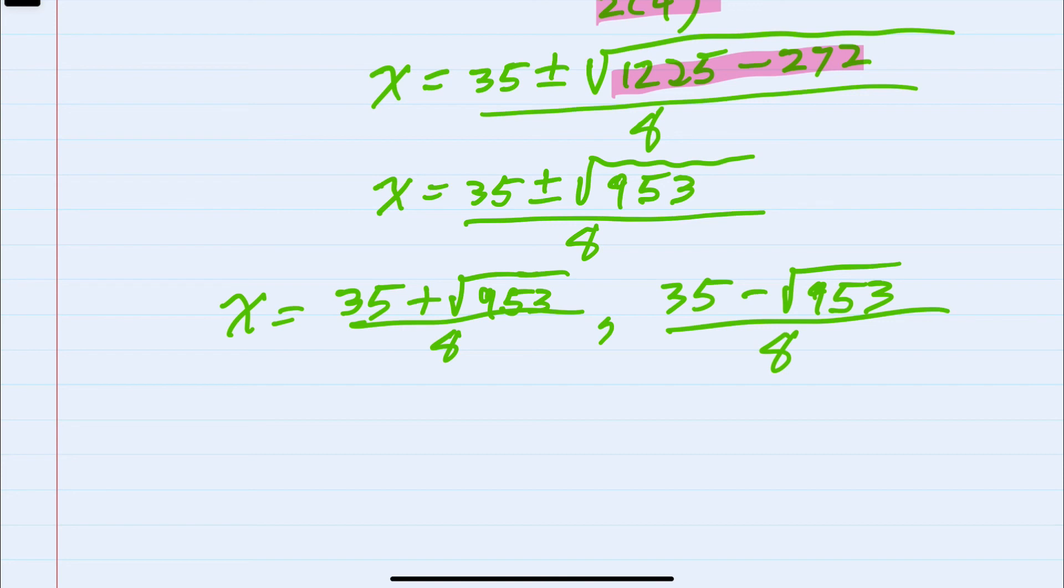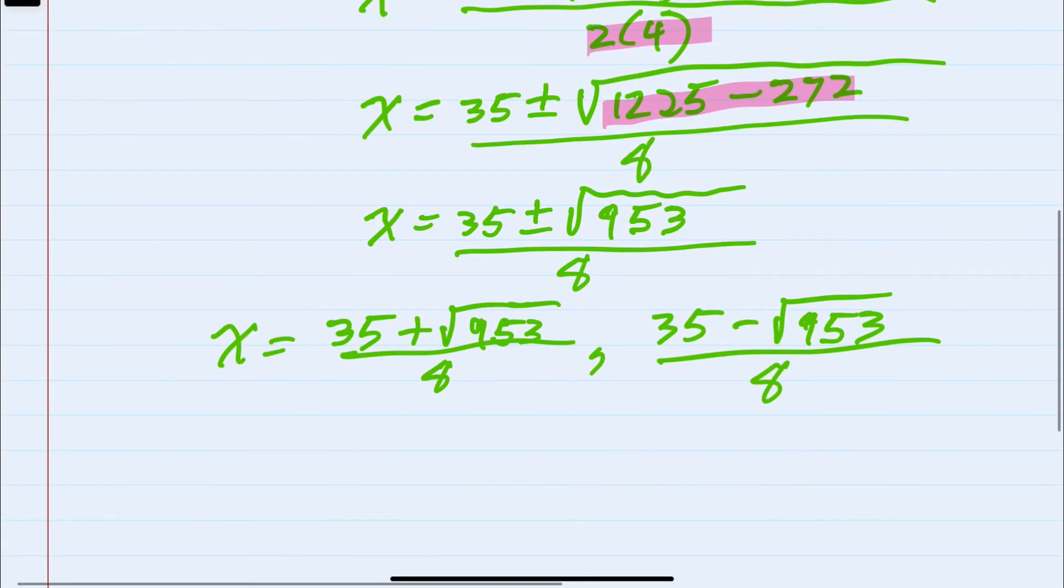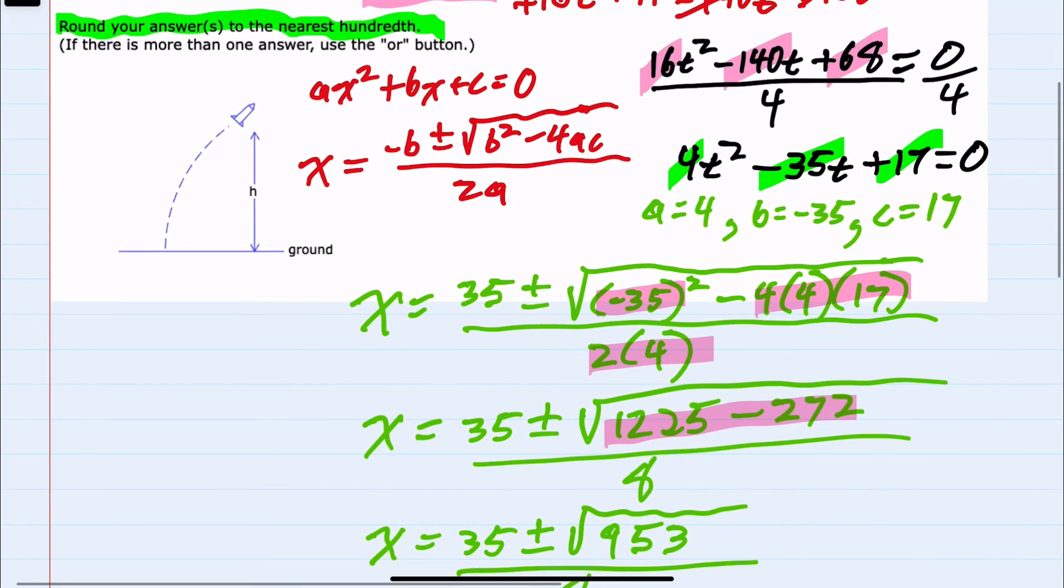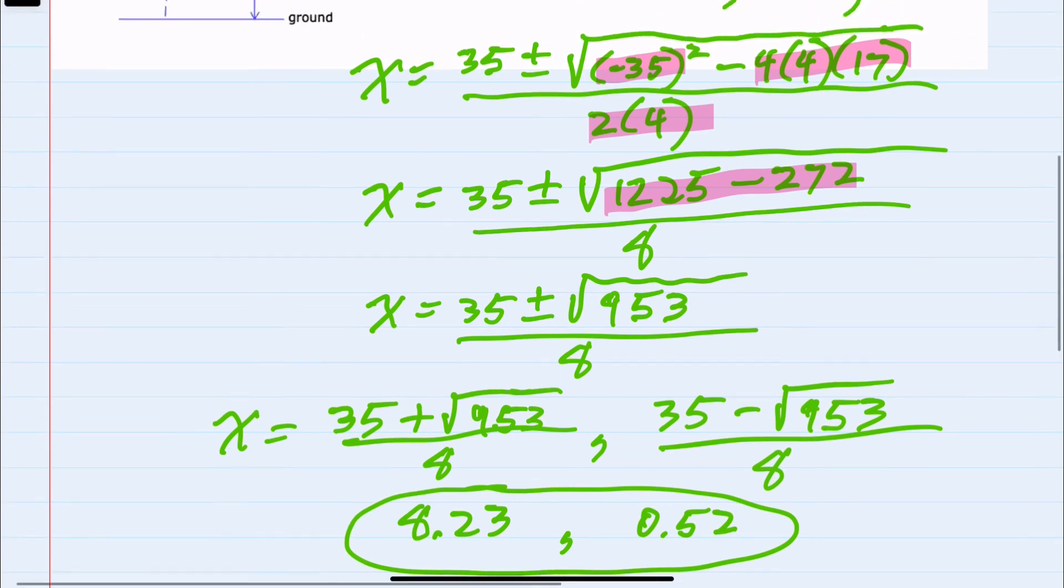And then using a calculator and rounding our solution to the nearest hundredth, we would have our first time value is 8.23 seconds and 0.52 seconds. So with these solutions, looking back at the problem, we can see that the rocket has this height twice: once shortly after takeoff at 0.52 seconds and then again as it's falling back to the ground at 8.23 seconds.